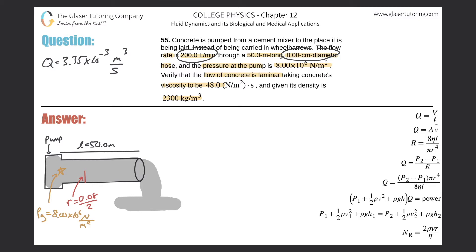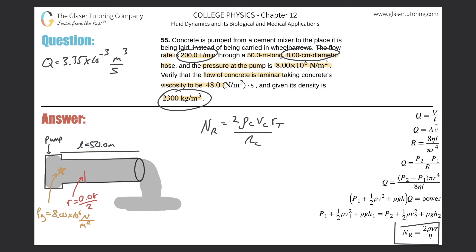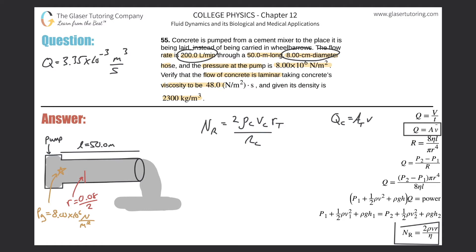Now let's move on to the actual question: calculate the Reynolds number. The Reynolds number equals 2 times the density of the flowing fluid times the velocity of the concrete times the radius of the tube, all divided by the viscosity. We know the density, radius, and viscosity — the only unknown is the velocity of the concrete.